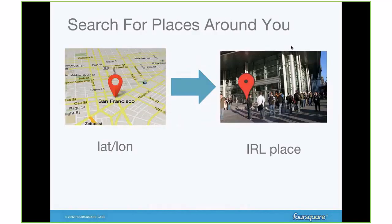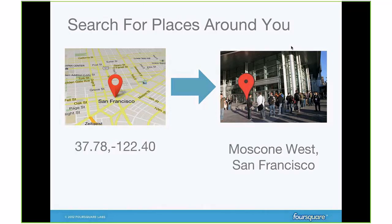By far the number one use case for Foursquare is our reverse geocoder, where you give us a latitude and longitude and we tell you what is near that area. I like to think of the API as: you give us a lat/long and we tell you what's interesting, what's good to see, what's going on around that location. We'll show you venues, tips in the area, and who's at these venues right now. For example, if you pass the lat/long for Moscone West in San Francisco, you'll see all the activity around it.